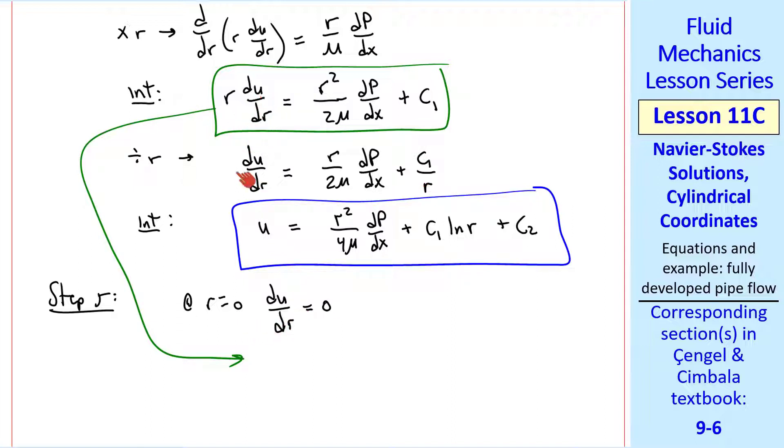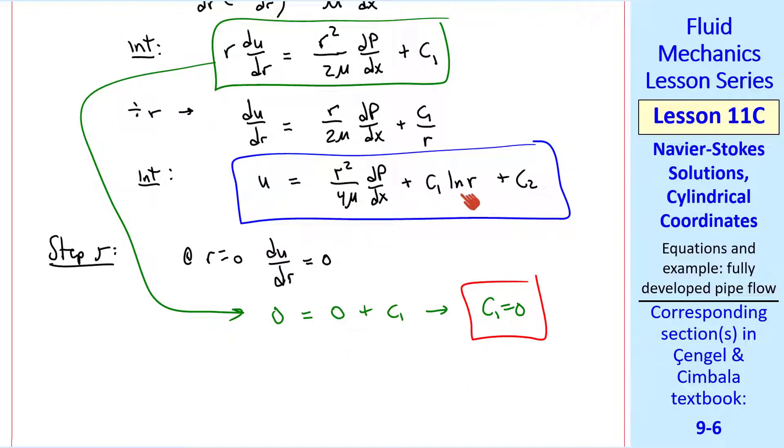For this boundary condition, both r and du/dr are 0. So we have 0 equals, r² is 0, so that's 0, plus c1. So c1 is 0. That gets rid of this term.